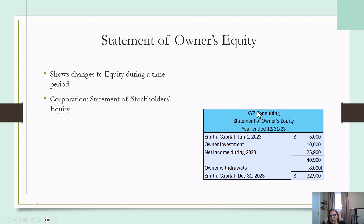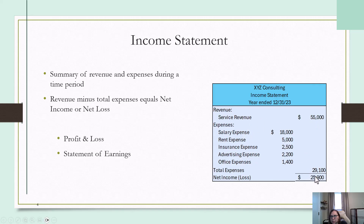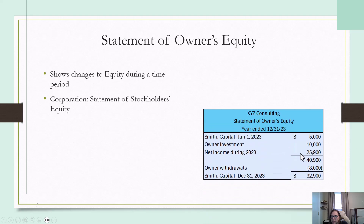This is what a statement of owner's equity might look like for the year ended December 31, 2023. You would start with the beginning capital at the beginning of the year, add any additional owner investments, and add net income — which is carried forward from the income statement. The $25,900 from the income statement is carried forward here. You could do a subtotal; the $40,900 is just a subtotal of those numbers. Then you would subtract any owner draws during the year, and that gives you the ending capital at the end of the year.